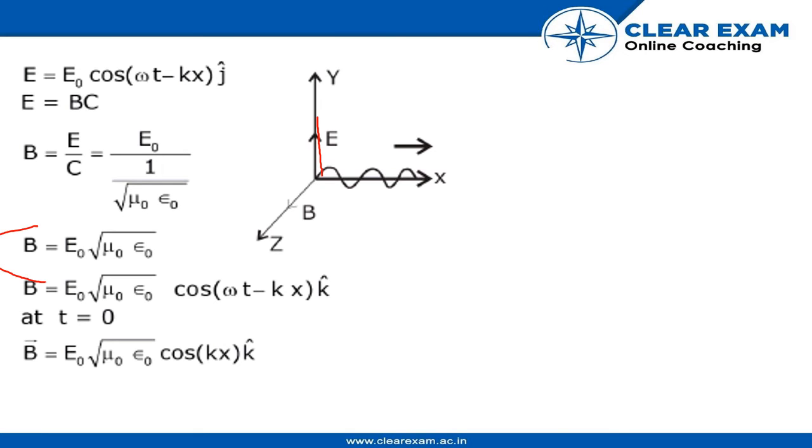Simplifying this equation, we get B = E₀√(μ₀ε₀). We substitute the value of E, which is E₀ cos(ωt - kx).